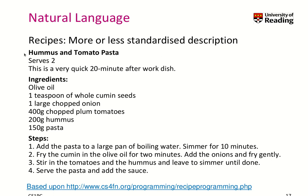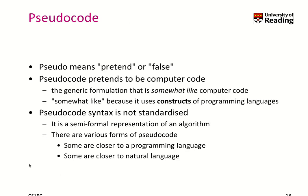Recipes are more or less a standardized description. Here's one: hummus and tomato pasta. You see some ingredients and some steps. Next, we have pseudocode. 'Pseudo' means pretending or something that is false, so it's not really code — it's false code. It's kind of like computer code but also closer to our natural language than a real programming language. Typically, pseudocode uses constructs of programming languages. It's not standardized, so it's a semi-formal representation of an algorithm, and there are many forms of pseudocode — some closer to programming languages, some closer to natural language.